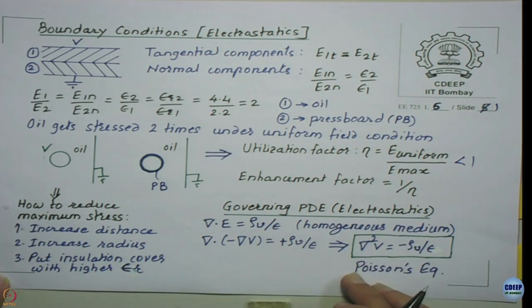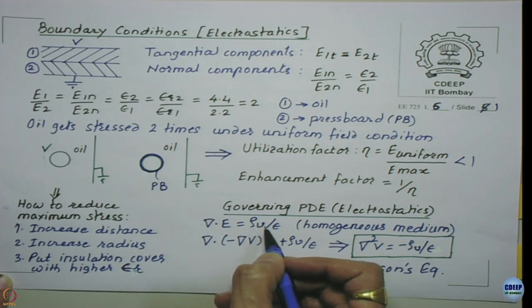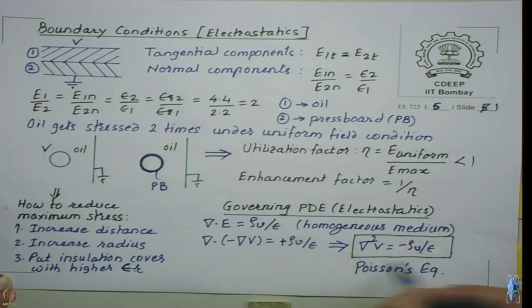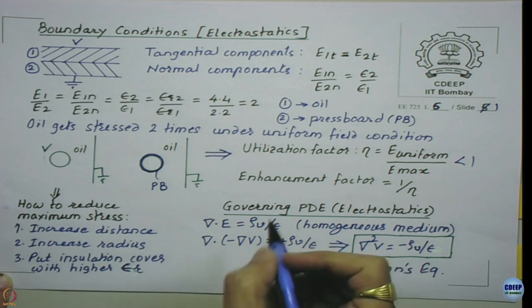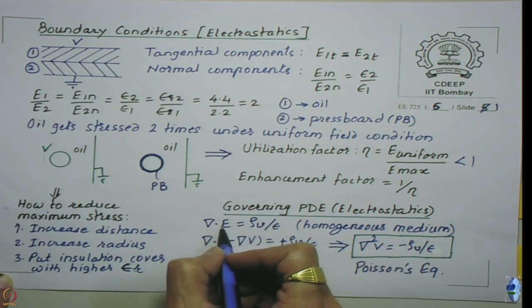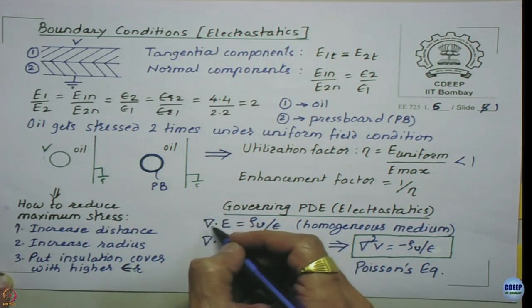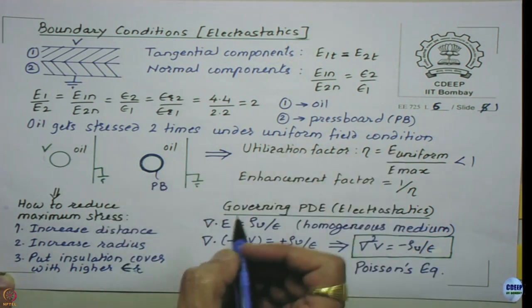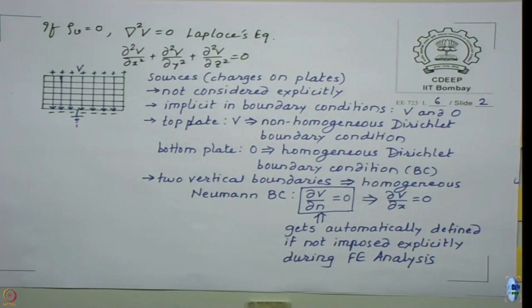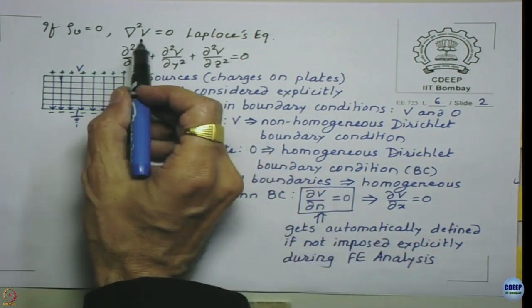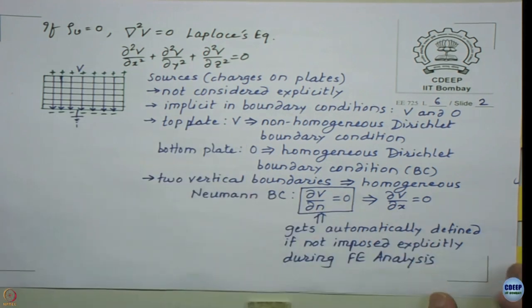The governing equation for electrostatics starts with divergence E = rho_v / epsilon. Replacing E with minus del V gives the well-known Poisson's equation: del-squared V = minus rho_v / epsilon. This assumes a uniform homogeneous material; for heterogeneous materials, epsilon must be placed inside the del operator since it varies with x, y, z. In FEM analysis we handle such things carefully. When volume charge density rho_v is zero, we get the well-known Laplace equation.